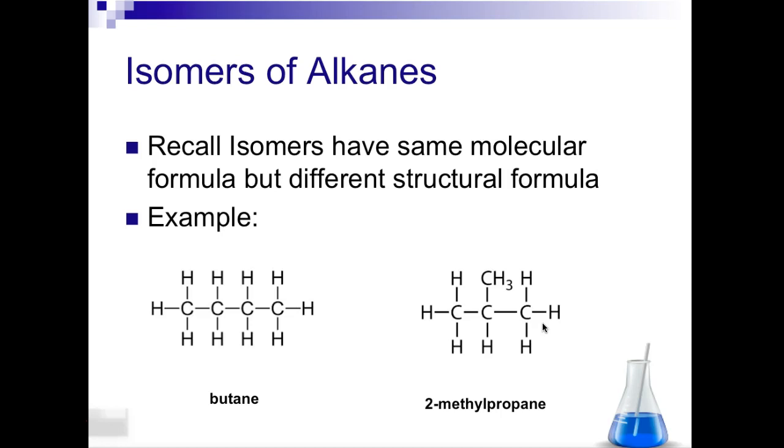Now, what about if we have isomers of alkane? So recall that isomers have the same molecular formula, but different structural formulas. So butane is going to be C4H10, but 2-methylpropane has the same molecular formula, but it has a different structure.